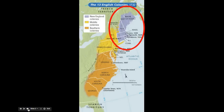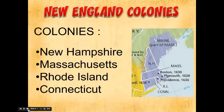Let's start with the northernmost colonies — the New England colonies. The colonies that make up this region are New Hampshire, Massachusetts, Rhode Island, and Connecticut. Again, note that Maine is actually part of Massachusetts at this point. You'll need to know those four colonies for the map test.